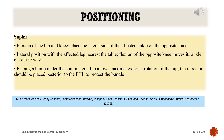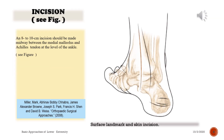The retractor should be placed posterior to the FHL to protect the neurovascular bundle. Incision: an 8 to 10 centimeter incision should be made midway between the medial malleolus and the Achilles tendon at the level of the ankle.